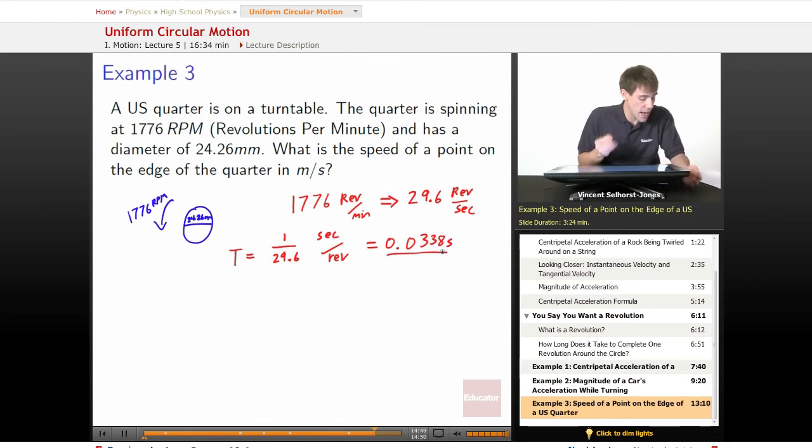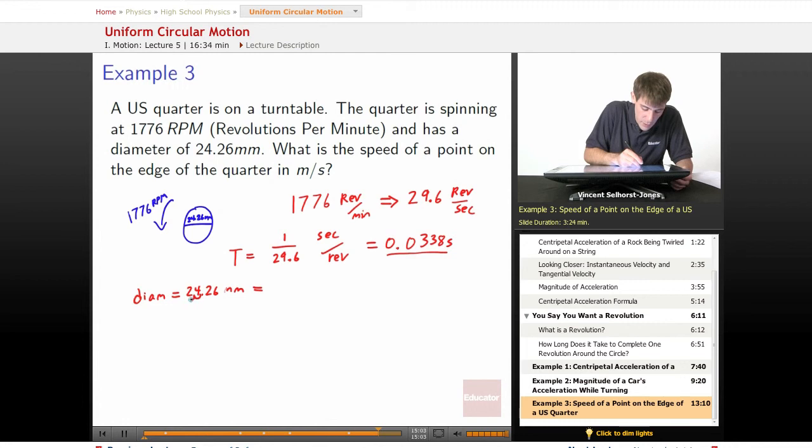What's the diameter if we want that in SI units? If your diameter starts off at 24.26 millimeters, then we're going to have this move over once to centimeters, another to decameters, and then finally to meters. We're going to get 0.02426 meters.